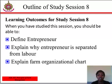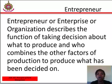Entrepreneur, or enterprise, or organization, describes the function of taking decisions about what to produce, and who combines the other factors of production to produce what has been decided on. An entrepreneur combines and organizes land, labor, and capital in such a way as to obtain maximum production of goods and services at minimum cost.